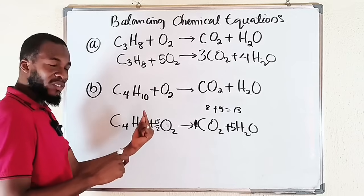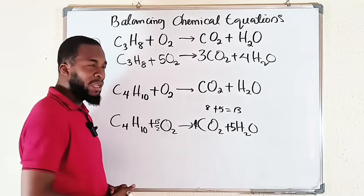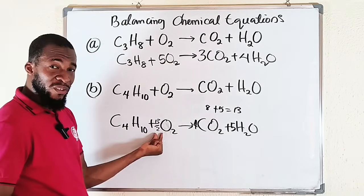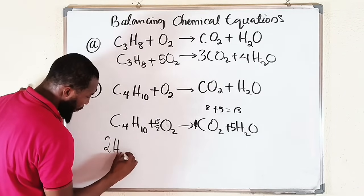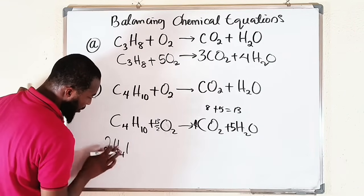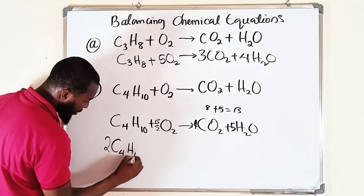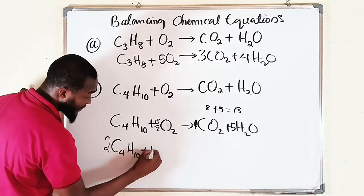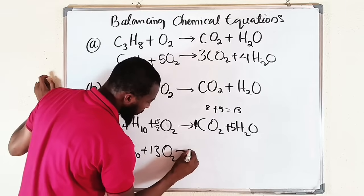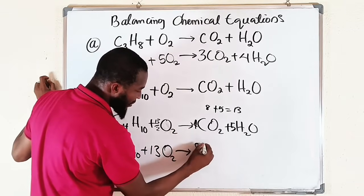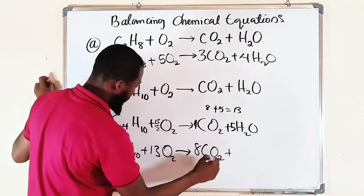Since we don't want fractions, we multiply every term by 2 — the denominator — to clear it. So the equation becomes: 2 C₄H₁₀ + 13 O₂ → 8 CO₂ + 10 H₂O. Multiplying 13/2 by 2 gives 13, the C₄H₁₀ coefficient becomes 2, CO₂ becomes 8, and H₂O becomes 10.